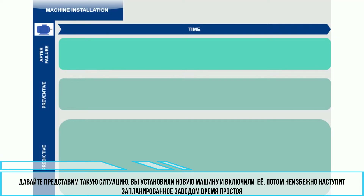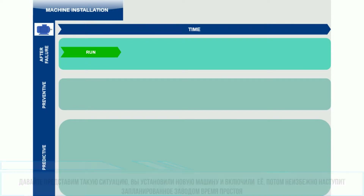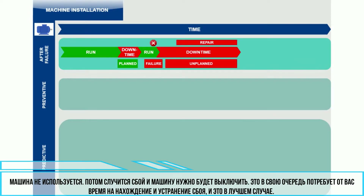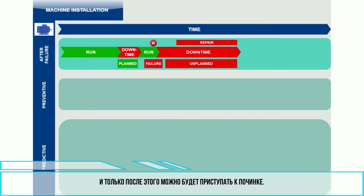Imagine this situation. You install a new machine and switch it on. Then, the planned factory downtime will come after a certain time. You do nothing with the machine. Then some failure will appear and the machine must be stopped. It takes some time to find and fix the cause of the failure — in the best case — and then repair the machine.